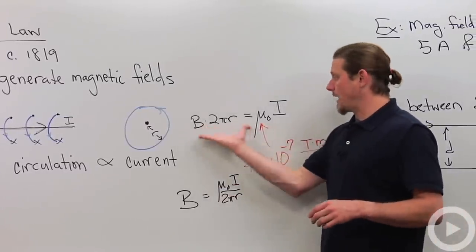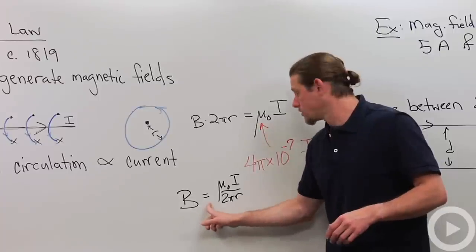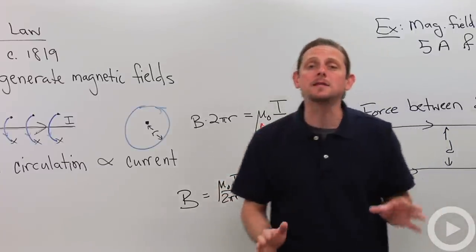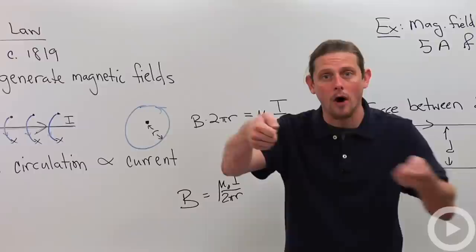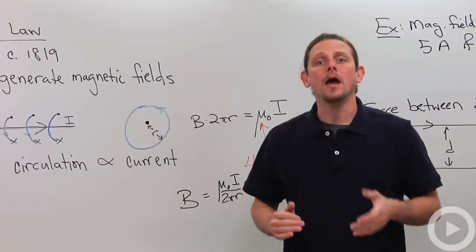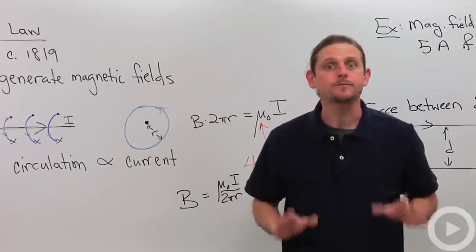Alright, so when I've got this expression, I'm going to solve for B, and it gives me B equals μ0I over 2πr. So that means if you double the distance that you are from a wire, you're going to halve the magnetic field. If you triple the distance from the wire, you cut it in thirds.